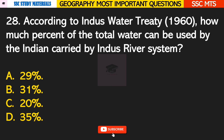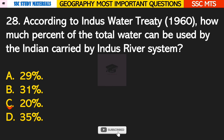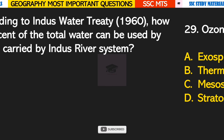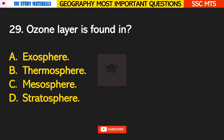Question number 27: where do the Bhagirathi and Alaknanda join? Answer B — both rivers join in Devprayag. Question number 28: according to the Indus Water Treaty, how much percent of the total water carried by the Indus River system can be used by India? Answer C — 20 percent.